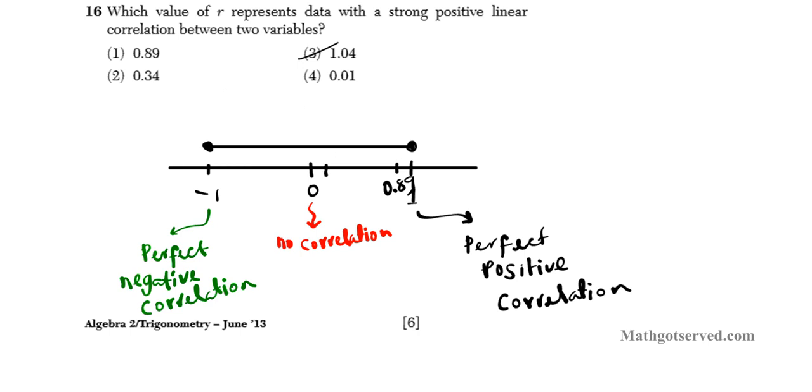Now look at 1.04 though. 1.04 is not possible because you are out of the range of correlation values. You have to be 1, negative 1, or anywhere in between. So the closer you are to 1, the stronger the positive correlation. So 0.89 is the closest number to 1 hence it is the strongest. 0.01 is somewhere here, and 0.34 is somewhere here. So the answer for number 16 is option number 1.